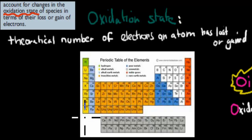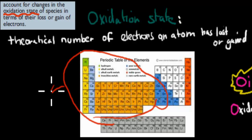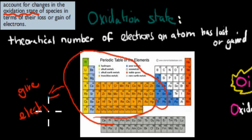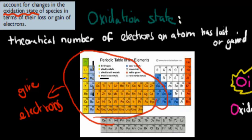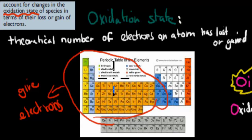I'm going to go over the periodic table and show you general trends in terms of which atoms like to lose electrons and which atoms like to gain electrons. These are the metals and hydrogen — these are the ones which usually like to give electrons. The reason they're the givers is they want to have eight electrons in their outer shell. For example, magnesium has two electrons in its outer shell — it's a lot easier for it to give away two than to take six. So magnesium generally gives away electrons, and all metals have that habit.